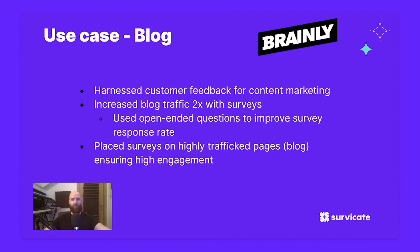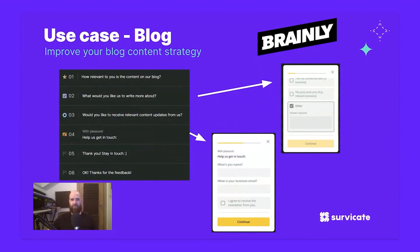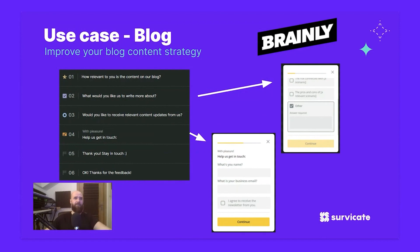Let's take a closer look at one of these surveys. Using our 'Improve Your Blog Content Strategy' template, the first question is 'How relevant to you is the content on our blog?' The key follow-up asks visitors what they actually want you to write more about — it's a multiple-answer question with an open-ended option at the end. Within the same survey, a fourth question encourages visitors to fill out a form field to be added to your newsletter list. Just like Brainly, you can double your traffic with a simple website survey — and more traffic means more leads and opportunities to convert.